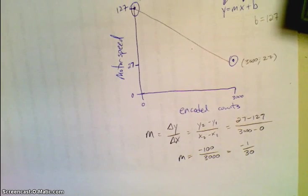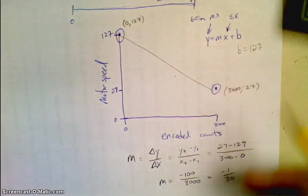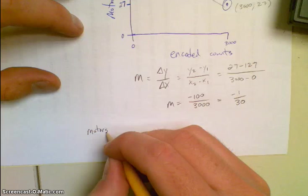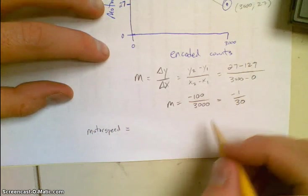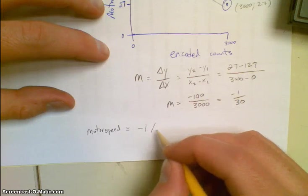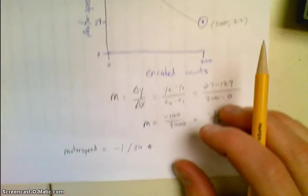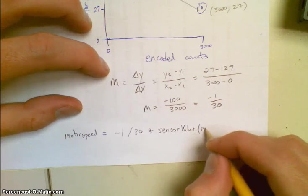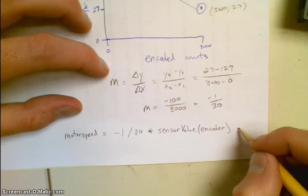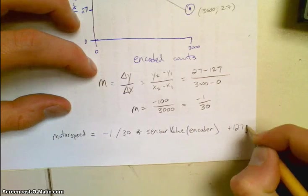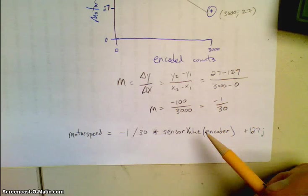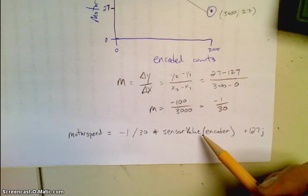So now I can write my equation for my p-loop. I can plug it right back into here with all my values. So I'm going to kind of write this in robot C language here. So I would have motor speed equals and then my slope, which would be negative 1 divided by 30 times the x, which is the sensor value of my encoder. So I'm going to put sensor value. And then plus 127. And this is the line of code that I would type in. And as long as I had this within a while loop where it could update, this would then update continuously. And then anytime the encoder change values, it would change the motor speed.